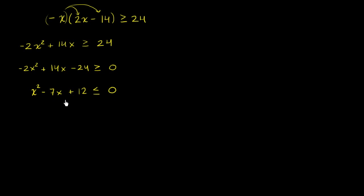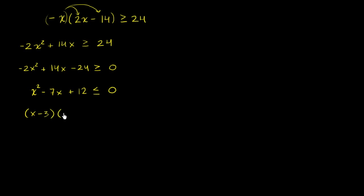That simplified things a good bit. Now let's see if we can factor this quadratic expression. We need two numbers whose product is positive 12 and whose sum is negative 7. Since they have the same sign and their sum is negative 7, they're both negative. Negative 3 and negative 4 fit the bill — their product is positive 12 and their sum is negative 7. So we write this as x minus 3 times x minus 4 is less than or equal to 0.